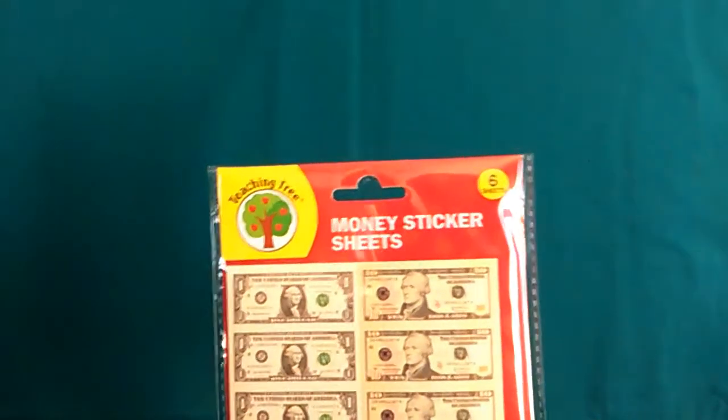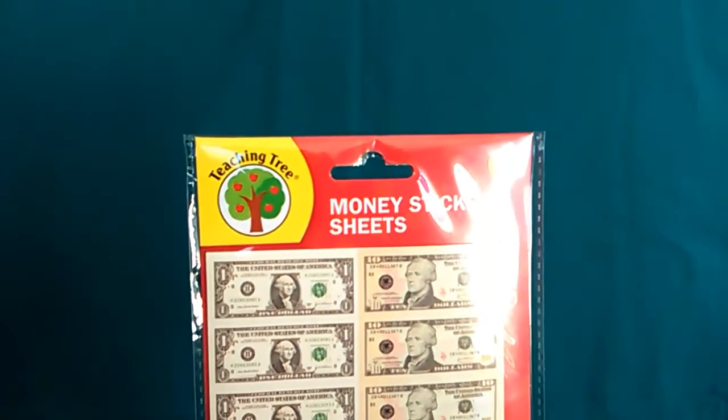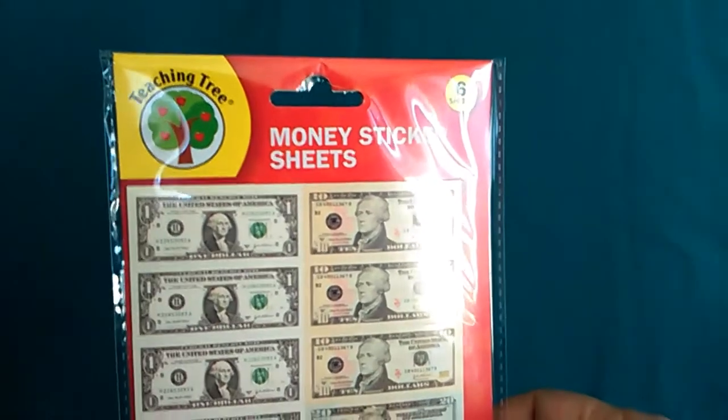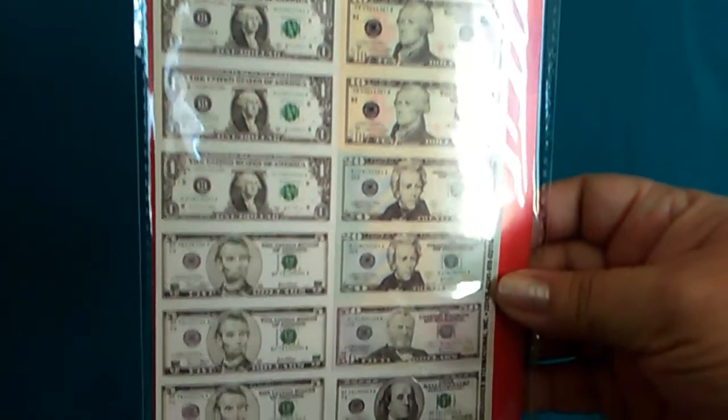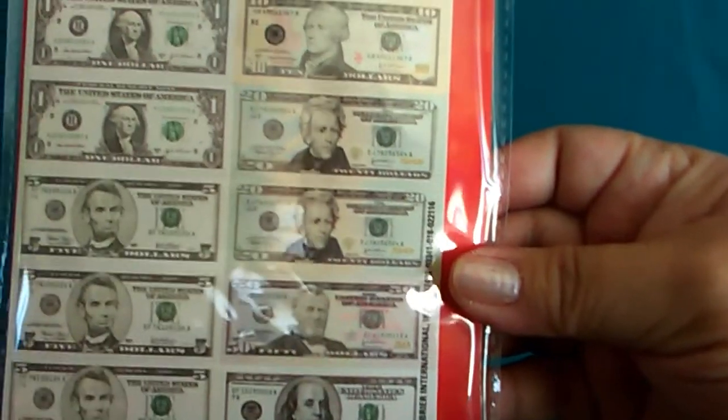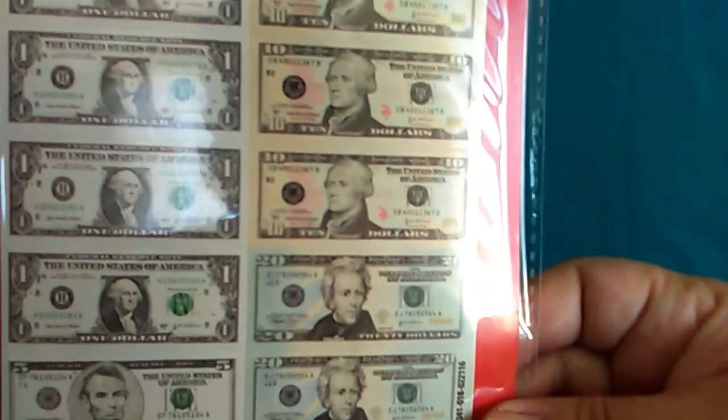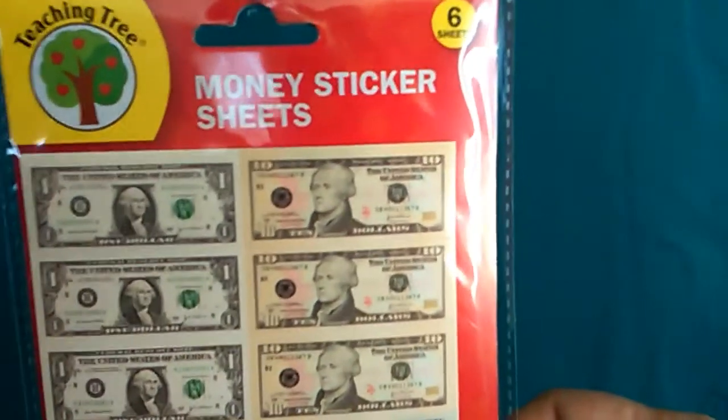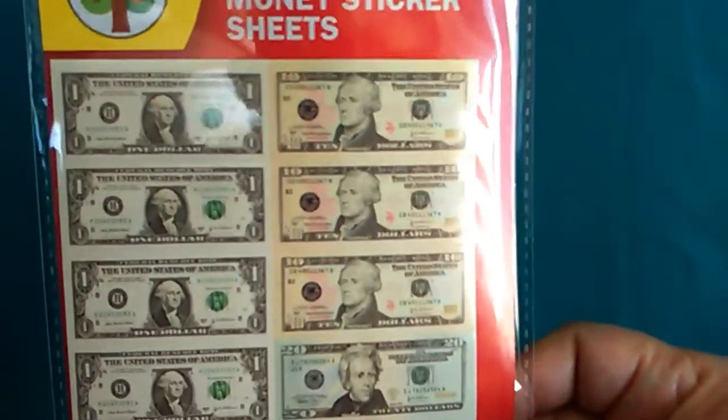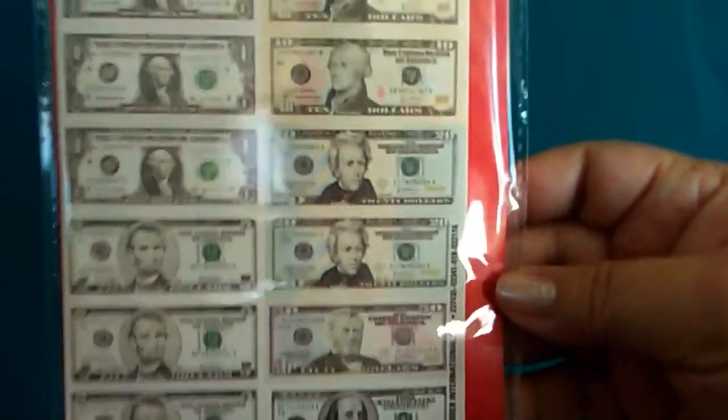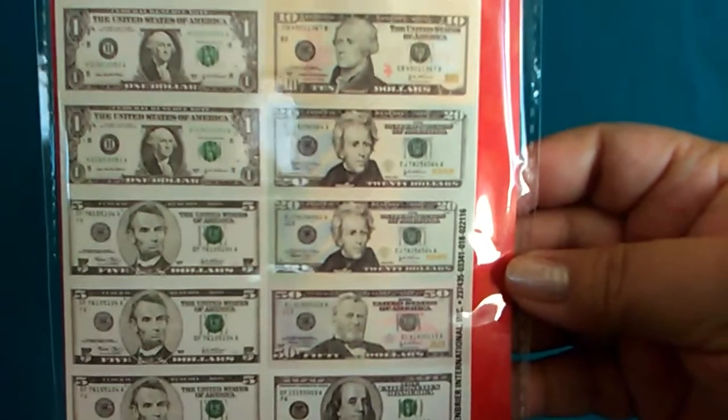And I found these stickers. I haven't seen them before, so they were new to me. They're dollar stickers - five dollars, hundred, fifty, twenty, and tens. And I thought that would be cute in the birthday cards to put a sticker in there, you know, to say, well I was going to give you some money but it shrunk. Too bad, so sad.